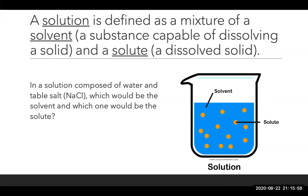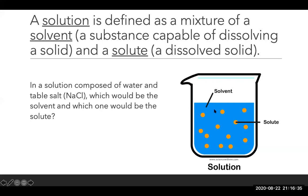A solution is defined as a mixture of a solvent — the substance capable of dissolving a solid, which is normally water — and a solute, which is a dissolved solid. In a solution of water and table salt, the table salt is the solute and the water is the solvent. Water is the universal solvent because its properties help it break apart other molecules. If we combine a solvent and a solute and mix them until everything is equally distributed, we call that a solution.